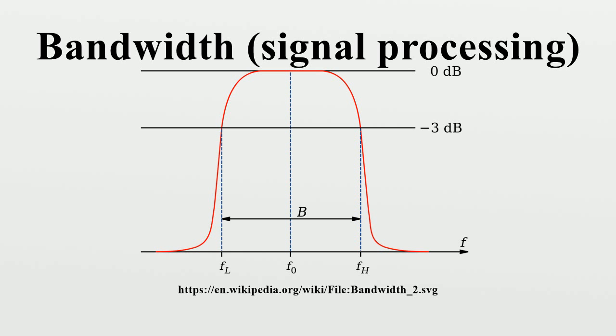For example, one definition of bandwidth for a system could be the range of frequencies beyond which the frequency response is zero. This would correspond to the mathematical notion of the support of a function.